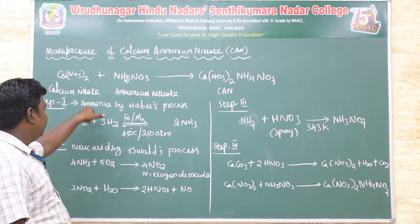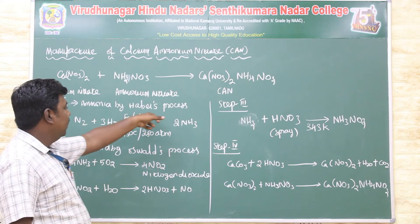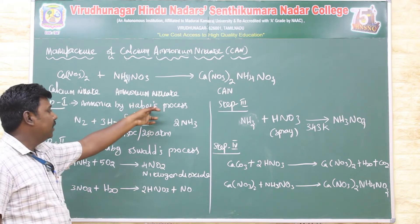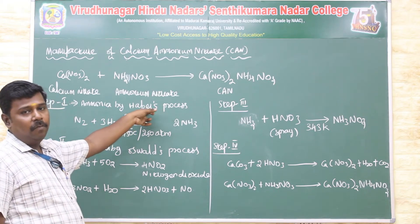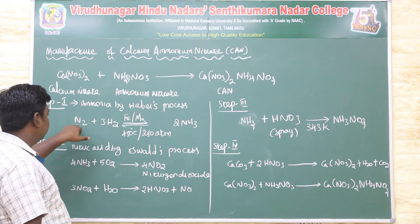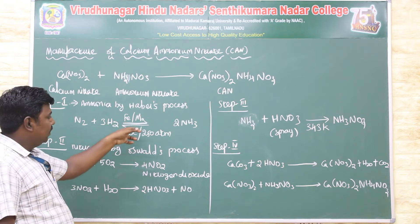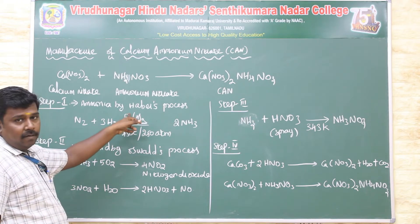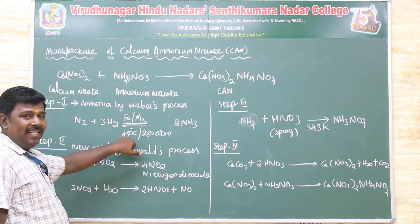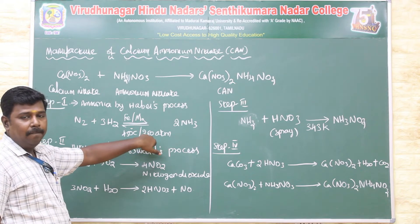Step one: preparation of synthesis of ammonia by Haber's process. In the Haber's process, nitrogen and hydrogen are reacted in the presence of iron or molybdenum catalyst at 450 degrees Celsius and 250 atmospheric pressure.